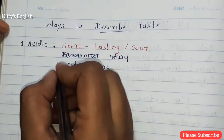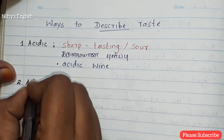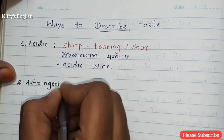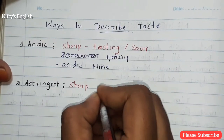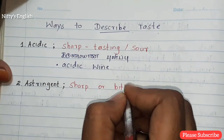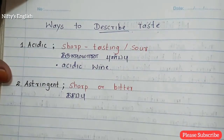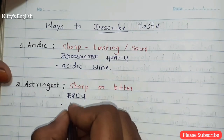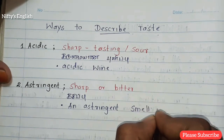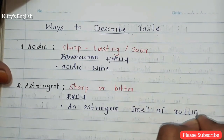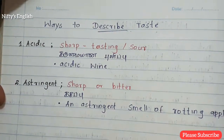The second one is astringent, meaning sharp or bitter. In Tamil, it means kasappu. For example: an astringent smell of rotting apples.